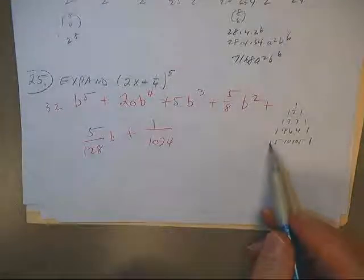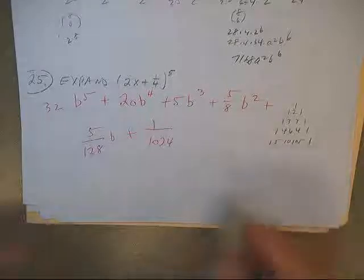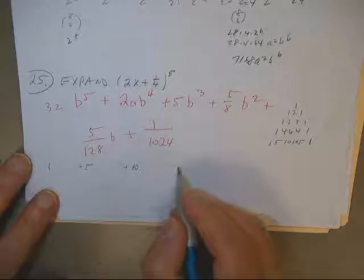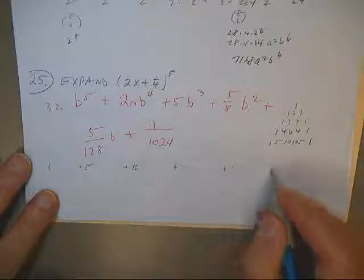Welcome back. We're on the fifth row. We want to do fifth row of Pascal's triangle. So we'd want 1, 5, 10, 10, 5, 1.